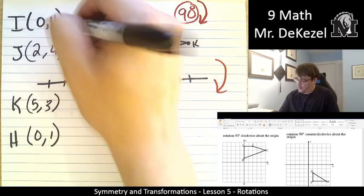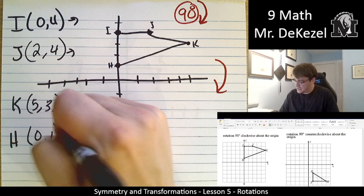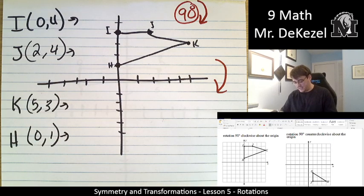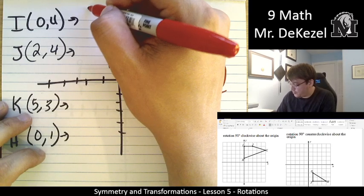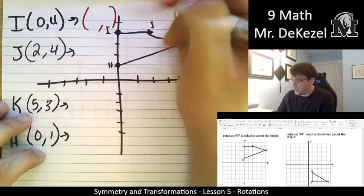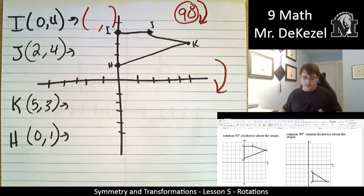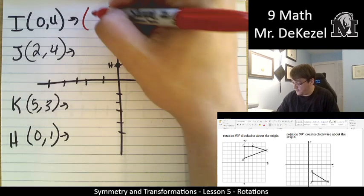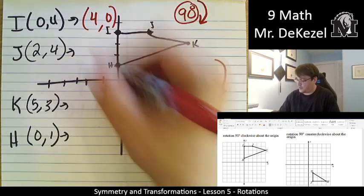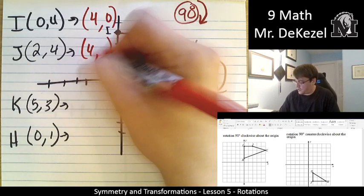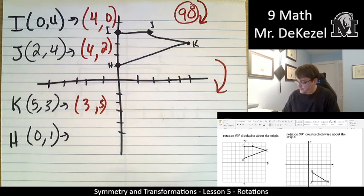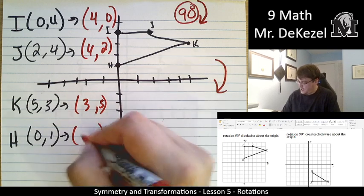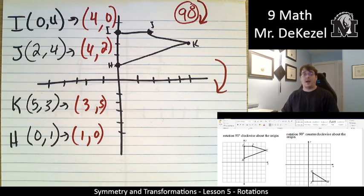The next step is to write all these points flipped around. We're going to flip them all around. Even if there were some negatives, we would just ignore negatives. We would just flip the numbers. So this one is 4 and 0, this one is 4 and 2, K is 3 and then 5, and then h is 1 and then 0.